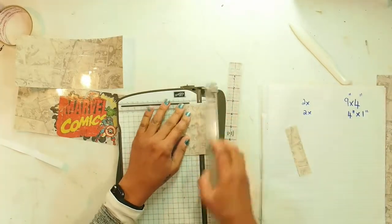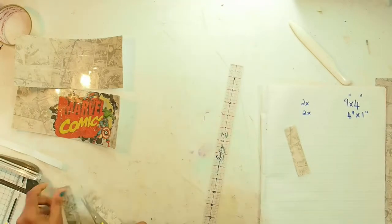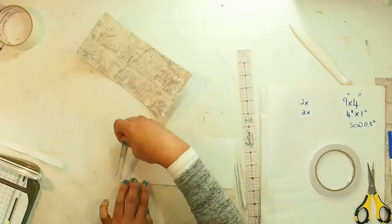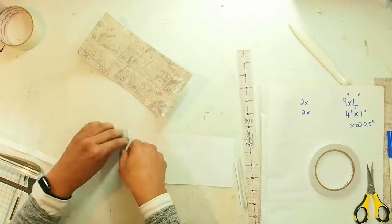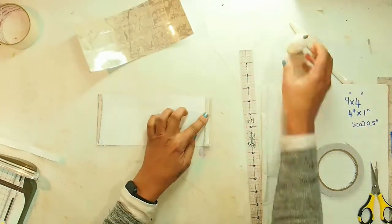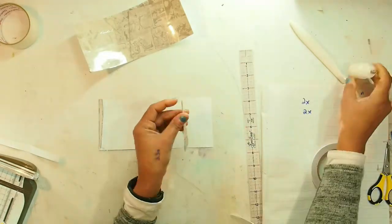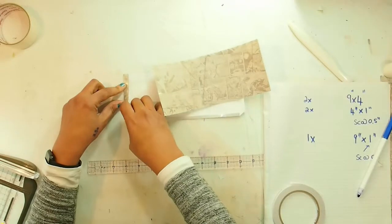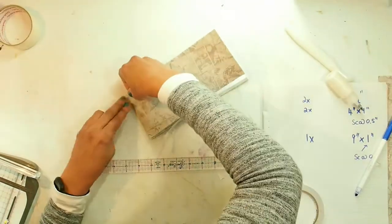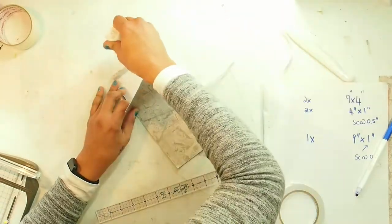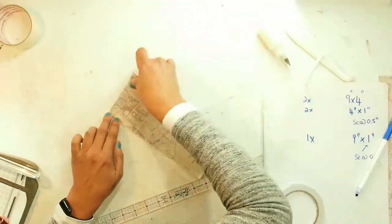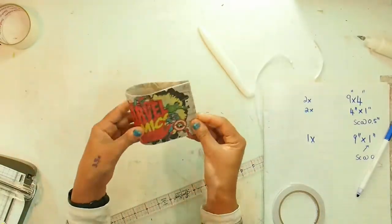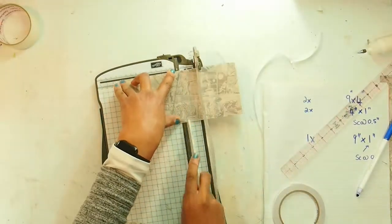So I'm just writing down the dimensions here on the side for you. I've got two panels cut at nine inches by four and I have two little bits that are four by one and one piece that is nine by one. They're going to act as the hinges so that you can close the two nine by four panels and turn them into a pocket. I'm using a combination of double-sided sticky tape and PVA glue, which is good to double up for future durability.